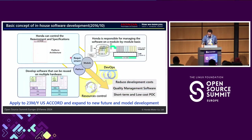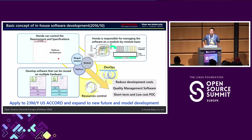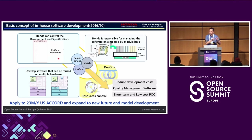This is the basic concept of in-house software development. The first and very important point is that requirements and specifications are controlled by Honda, because the current IVI system has a very large software scale. OEMs sometimes find it very difficult to control specification and requirements. But in this case, Honda has full control over requirements and specifications.